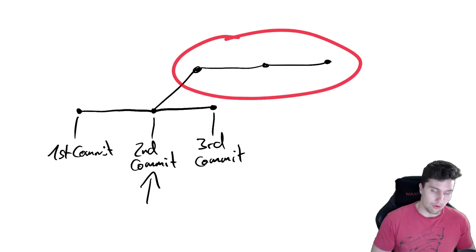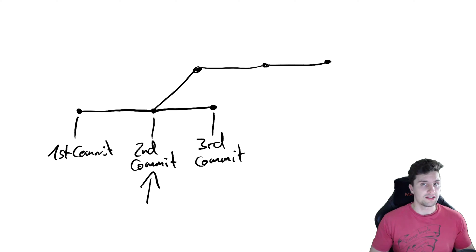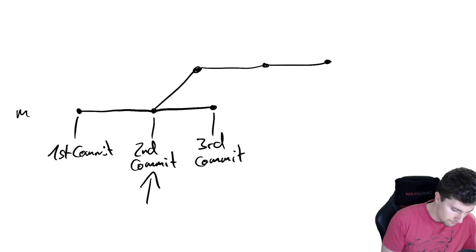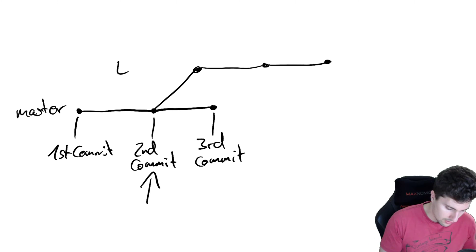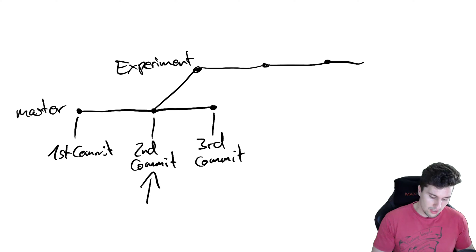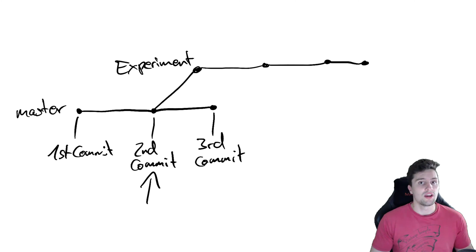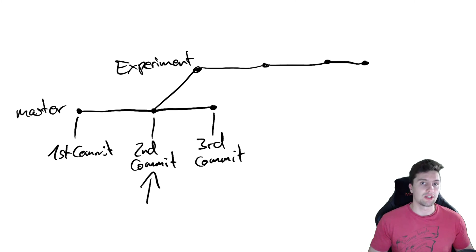Those commits from our other branch won't affect the commits that come after the second commit of the master branch. In Git, every branch needs its own name, such as the master branch. We can give our other branch a name, for example 'experiment'. If we are currently on the experiment branch and commit something, that commit will just be appended to the commits of that experiment branch, and not to the commits of our master branch.